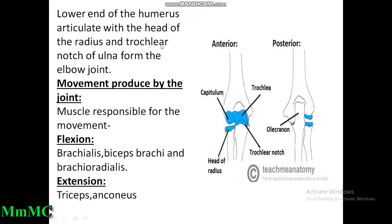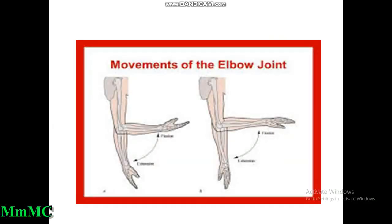The lower end of the humerus articulates with the head of the radius and trochlear notch of the ulna to form the elbow joint. This is the hinge variety of synovial joint. Muscles responsible for movement: flexion — brachialis, biceps brachii, and brachioradialis; extension — triceps and anconeus.